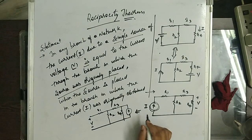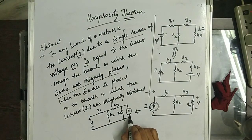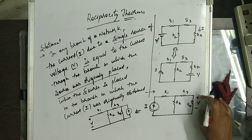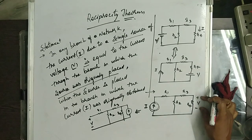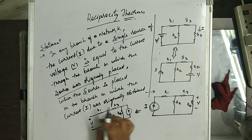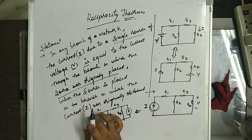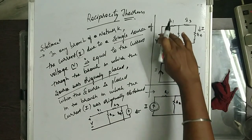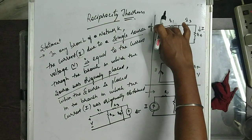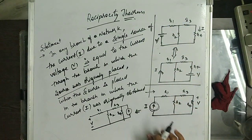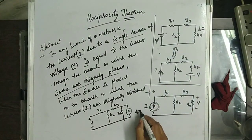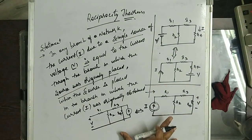The current source is replaced in parallel with the target element, and the response I need here is voltage. The response is placed where the source is initially present. This is when the voltage source is given; this is when the current source is given. So if we observe these two reciprocal circuits...